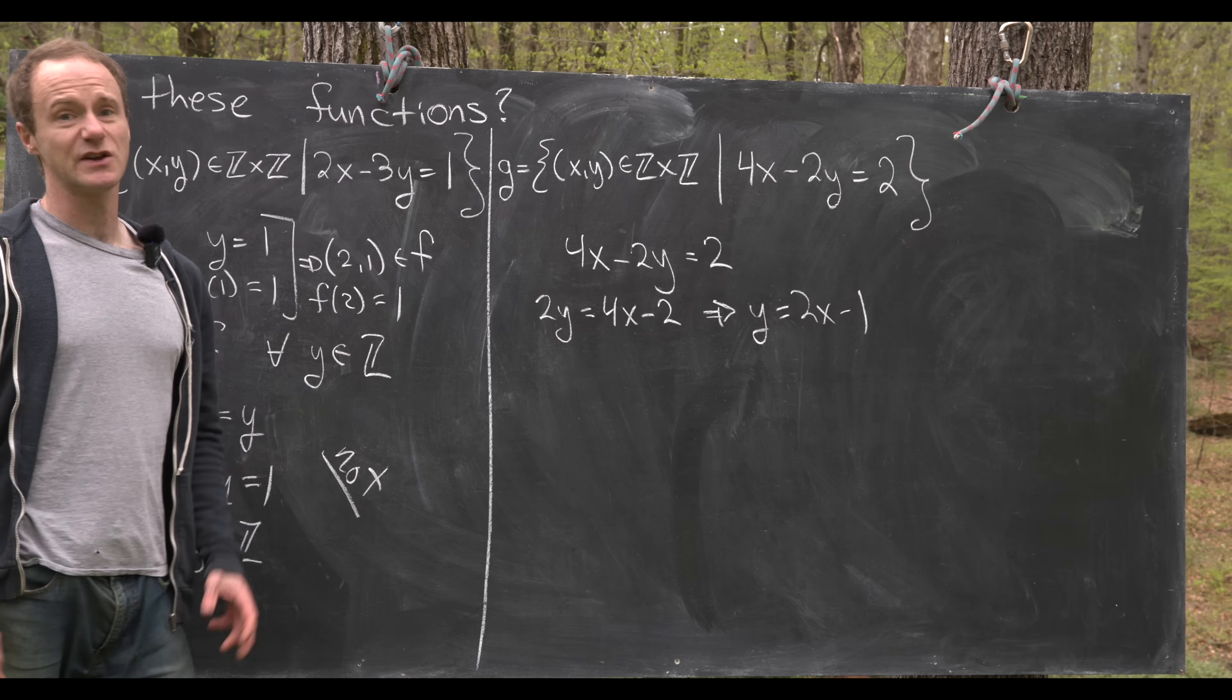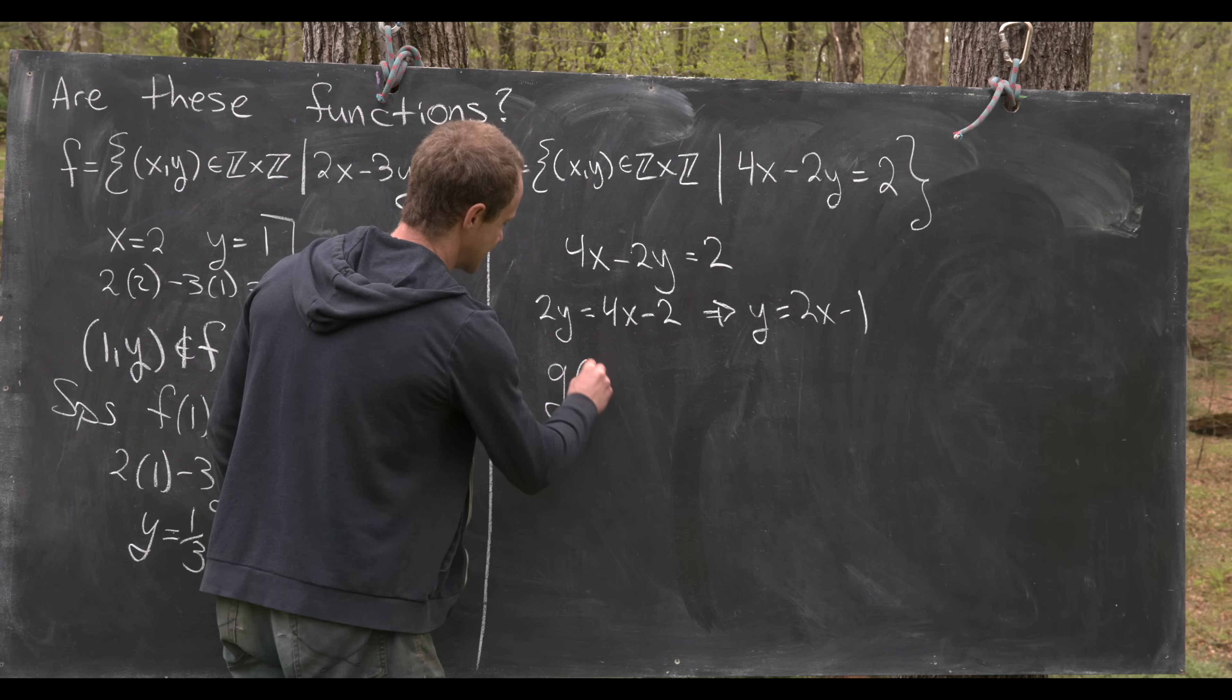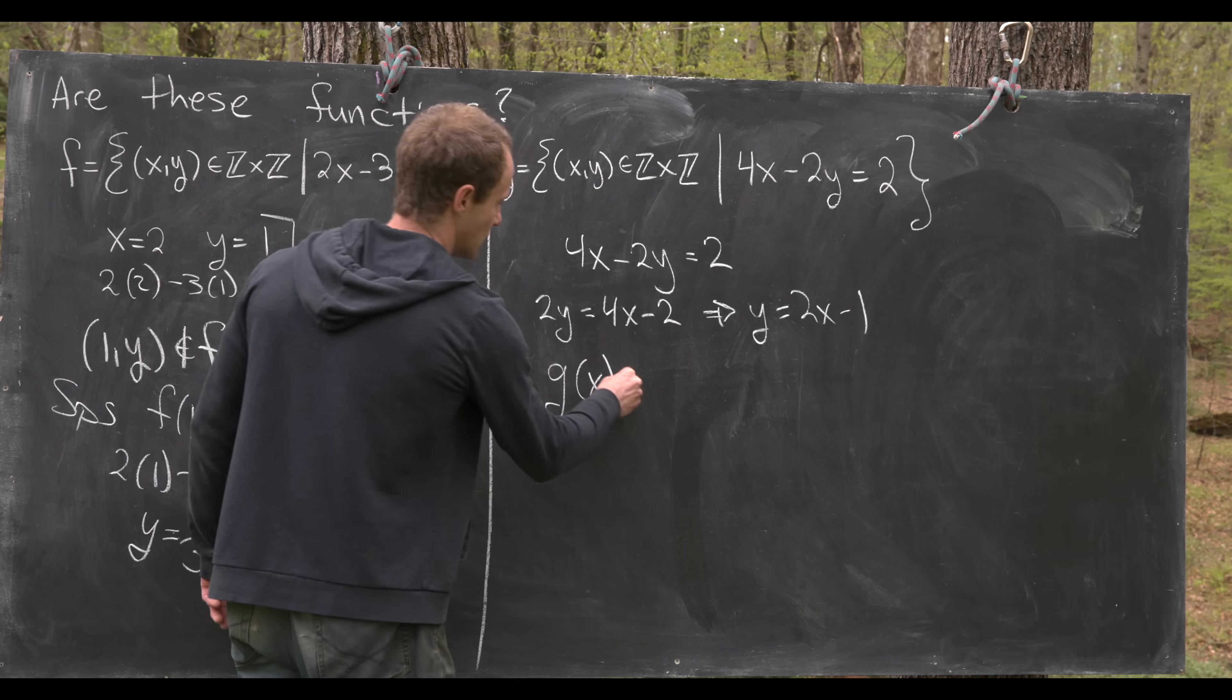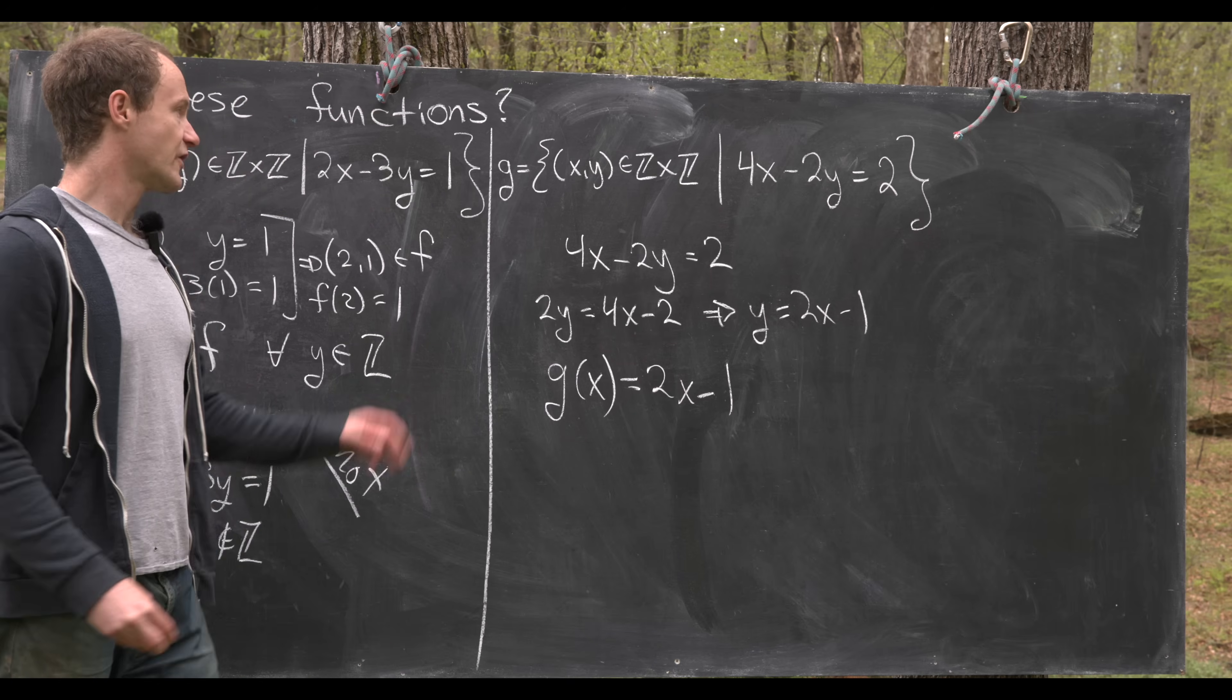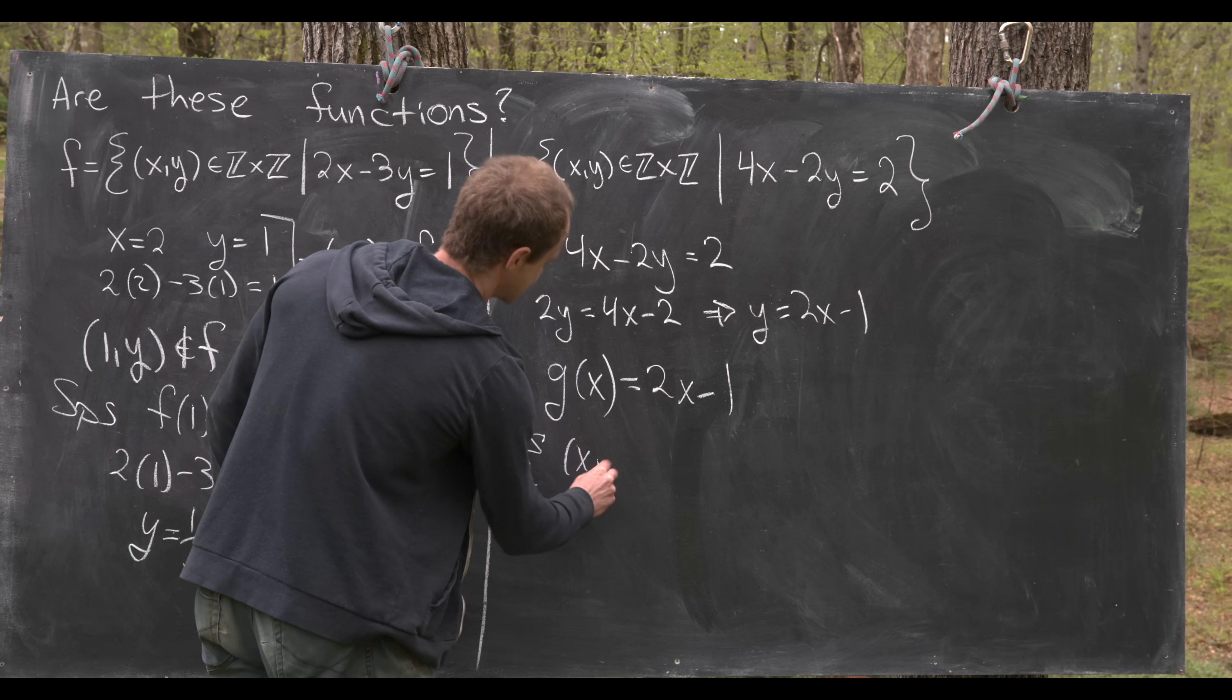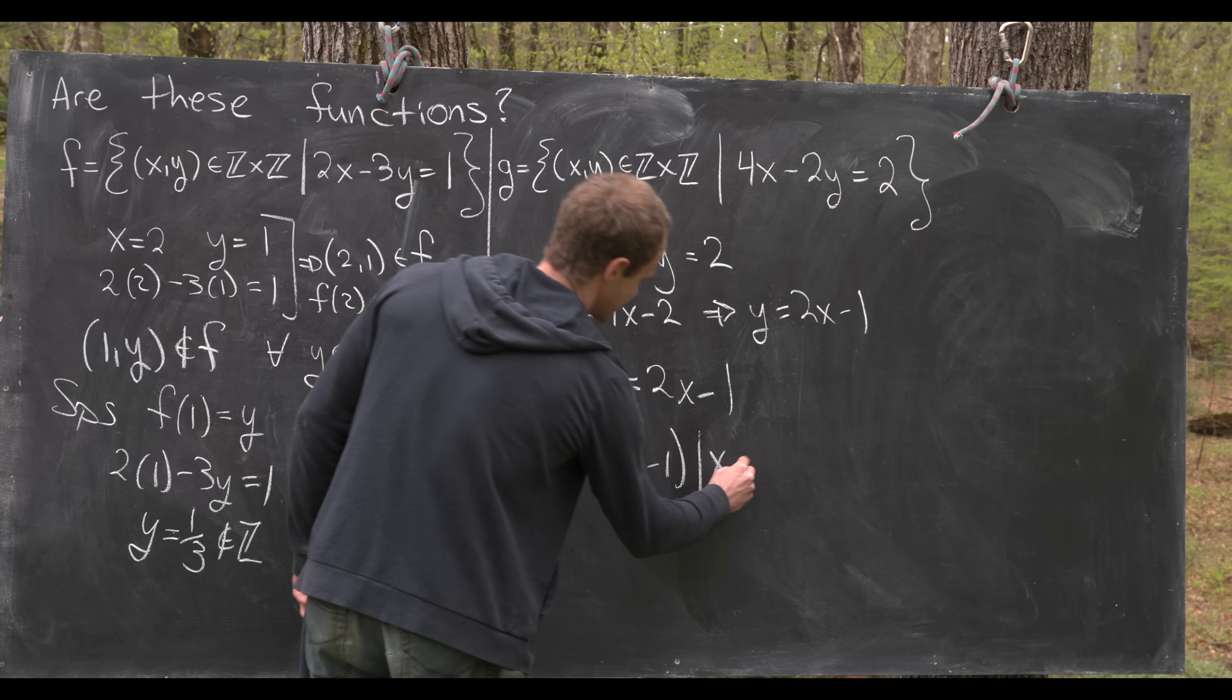And so in fact this is a function and it kind of has a calculus defined format of G(x)=2x-1. So in other words if we define the set like this {(x,2x-1)} as x ranges through all of the integers then that is also a way to define this function G.